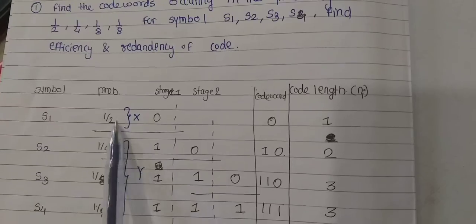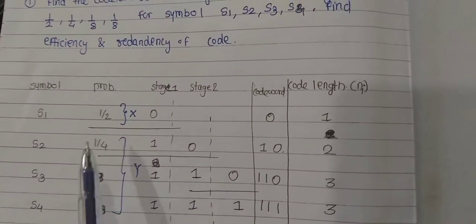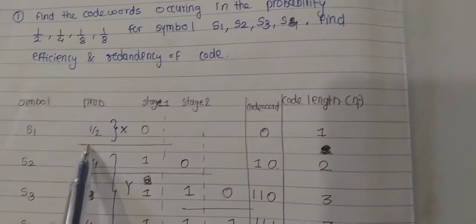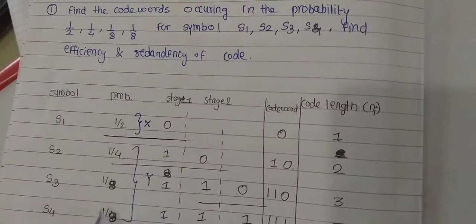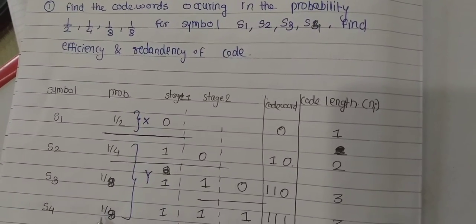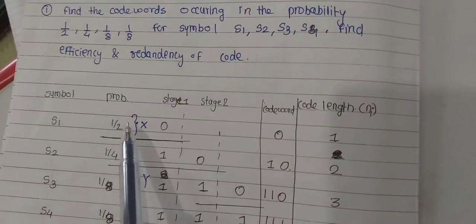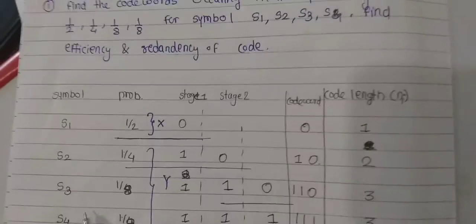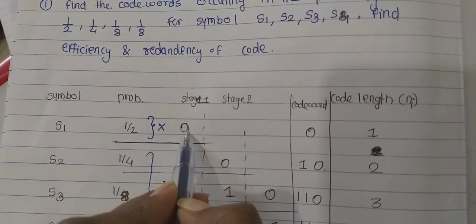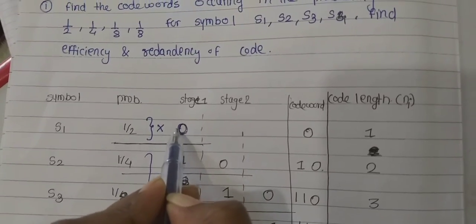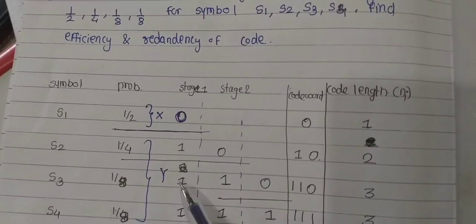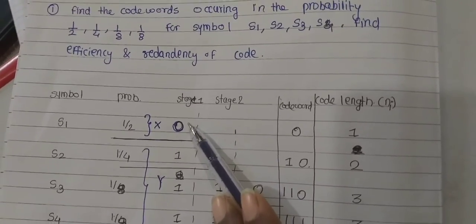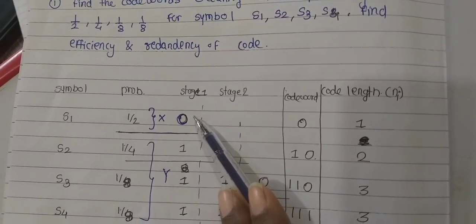If you add all these probabilities, the total summation is 1. You divide all probabilities into two halves: the first half is 1/2 (= 0.5) and the second half is 1/4 + 1/8 + 1/8 (= 0.5). For the first half, assign the symbol 0, and for the remaining, assign the symbol 1. For s1, stop here because only one symbol and one probability is in the first half.